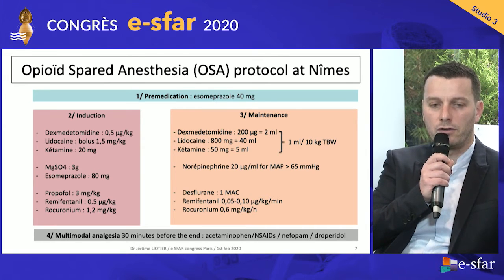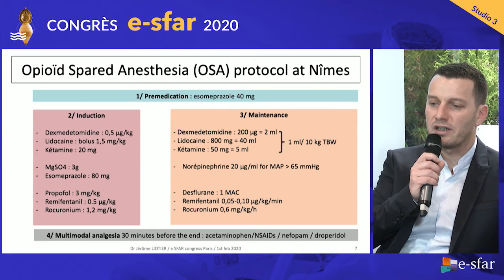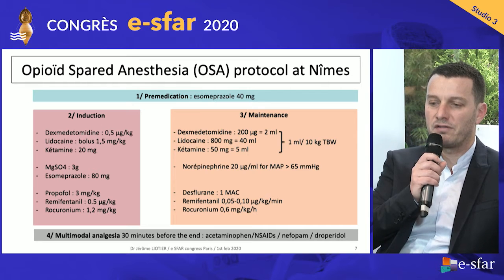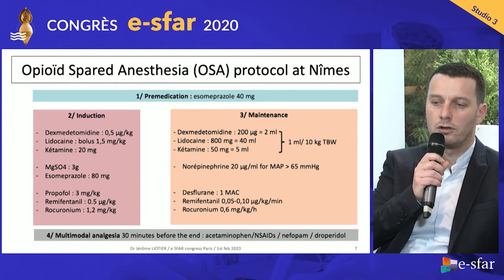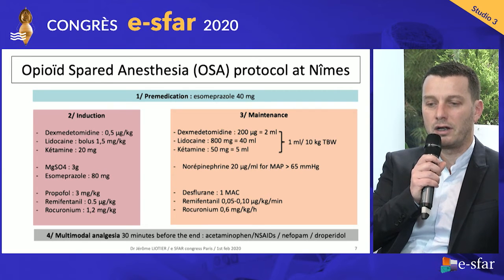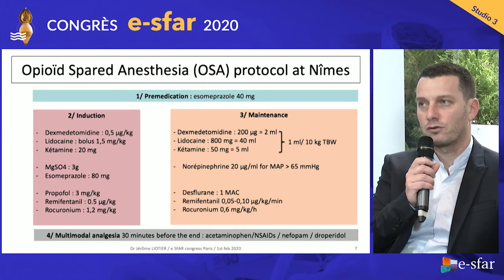This total body weight infusion is administered for four hours in PACU. For maintenance, we use norepinephrine to maintain mean arterial pressure above 65, and desflurane or sevoflurane at 1 MAC with remifentanil. Most of the time we don't need maintenance rocuronium — we use only one dose, but if needed you can redose accordingly. Thirty minutes before the end of anesthesia, we give multimodal analgesia with acetaminophen, NSAIDs, nefopam, and droperidol.